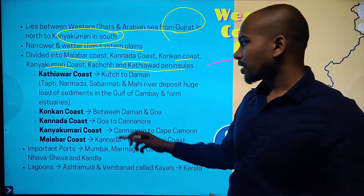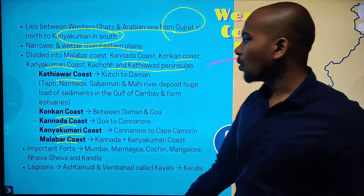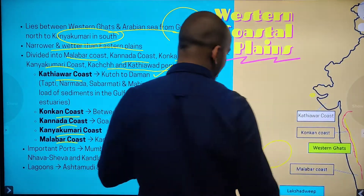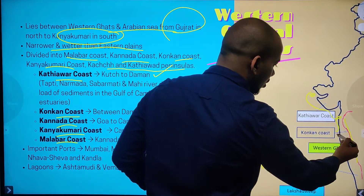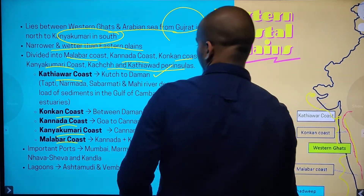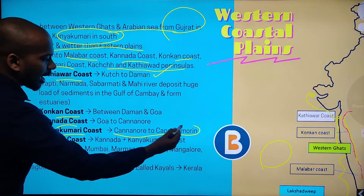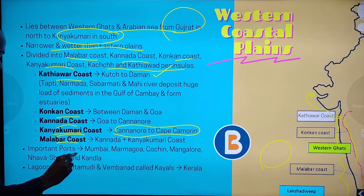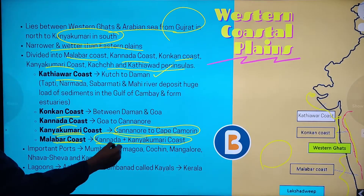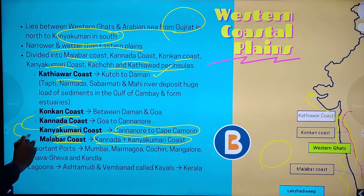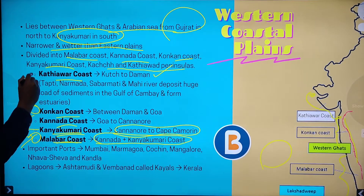Broadly, it can be divided into Kathiawar coast, Konkan coast, Kannada coast, Kanyakumari coast, and Malabar coast. From Kutch to Daman and Diu, this area can be called Kathiawar coast. After that, you have Konkan coast and then mainly Malabar coast. The Kannada to Cape Comorin area is called Kanyakumari coast, and Malabar coast includes both the Kanyakumari and Kannada coasts together. So broadly, you can say it is Malabar coast, Konkan coast, and Kathiawar coast.